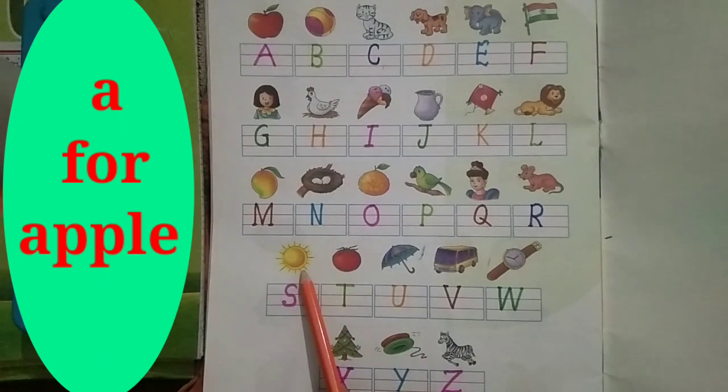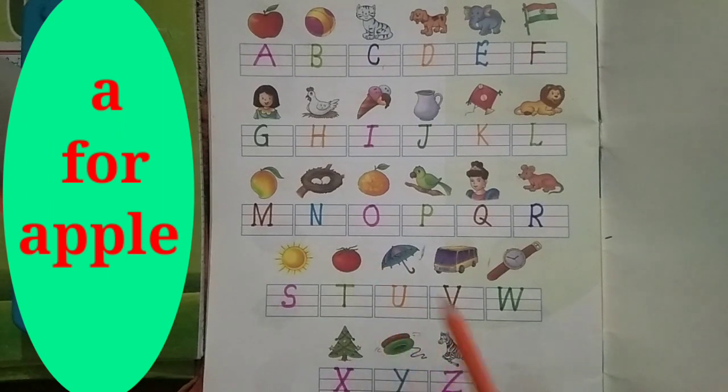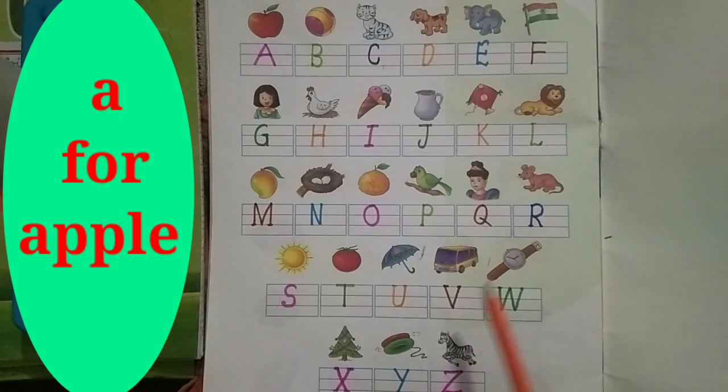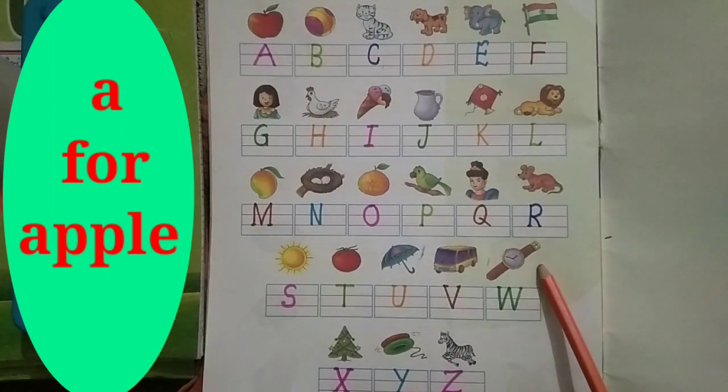S for sun, T for tomato, U for umbrella, V for van, W for watch.